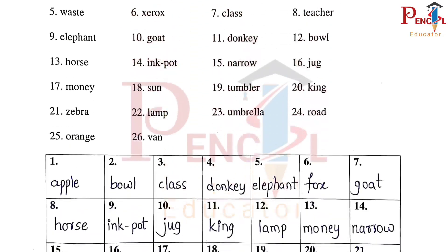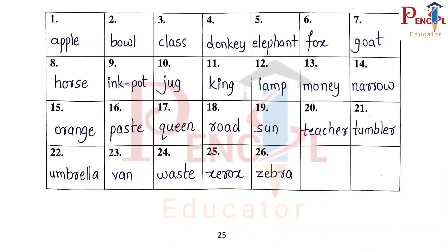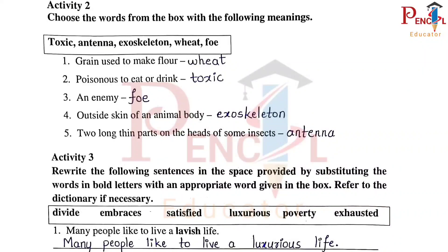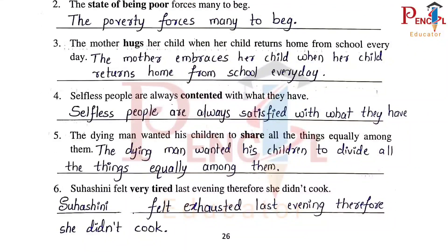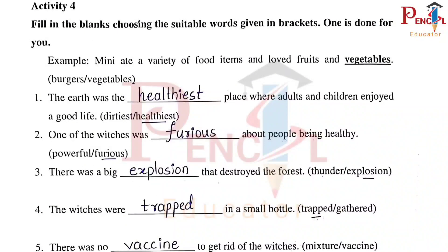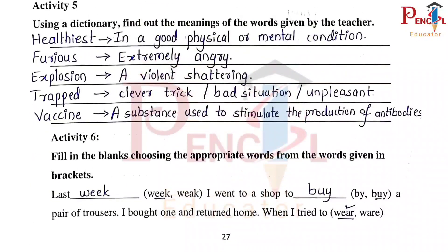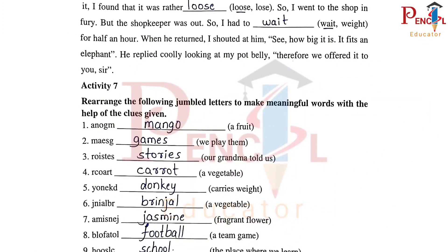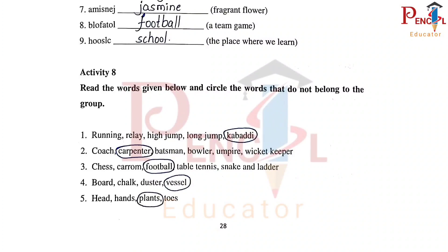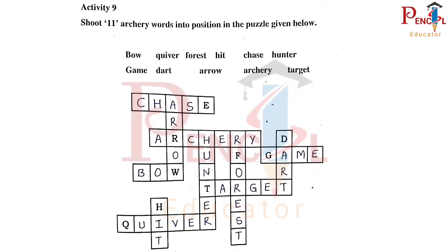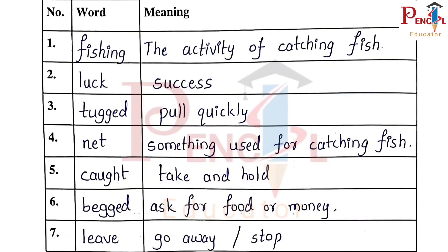Learning Sheet 4 — the words are rearranged in alphabetical order. Activity 2, Activity 3. Activity 4: Healthiest, Furious, Explosion, Trapped, Vaccine. Activity 5, Activity 6 — Weak Boy, Lose Weight. Activity 7: Mango, Games, Stories, Carrot, Donkey, Brinjal, Jasmine, Football, School. Activity 8, Activity 9 — Puzzle. Assessment Activity: Words and Their Meanings.